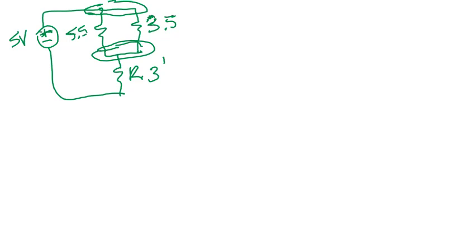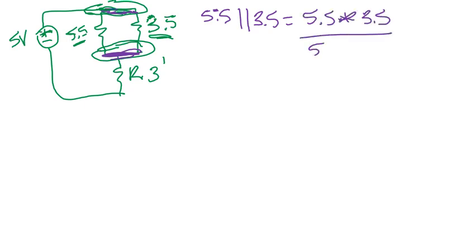Now, is anything in series or in parallel? Well, now I have 5.5 and my 3.5 ohm resistor in parallel. They go from the same node on top to the same node on bottom. So you have to have the same voltage drop across it. So 5.5 in parallel with 3.5. To do that, I do 5.5 times 3.5 over 5.5 plus 3.5. And that gets me 2.139 ohms.